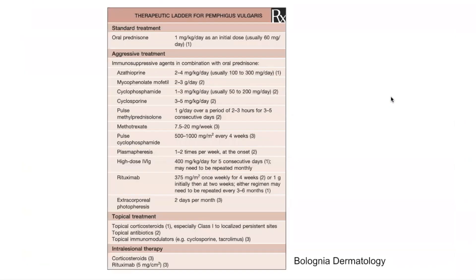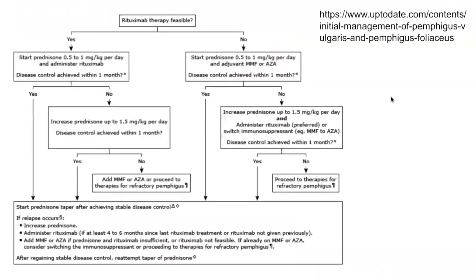This table from a textbook demonstrates the treatment ladder for Pemphigus vulgaris. The standard initial treatment is oral prednisone, followed by consideration of a steroid-sparing agent, with increasing evidence indicating rituximab as the first choice. Traditionally, alternative steroid-sparing agents have included azathioprine, mycophenolate mofetil, cyclophosphamide, methotrexate, plasmapheresis, IVIG, and ECP. A flowchart from UpToDate also demonstrates that rituximab should be considered as the first-line steroid-sparing agent once there is some control with oral systemic prednisone.